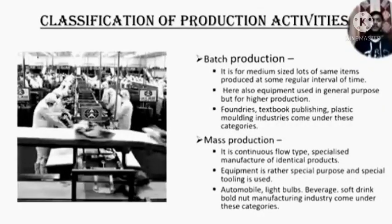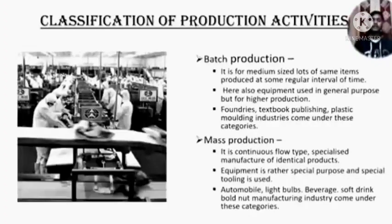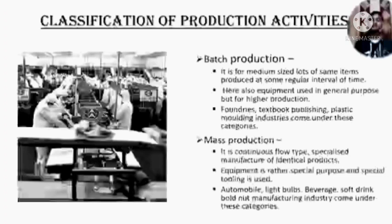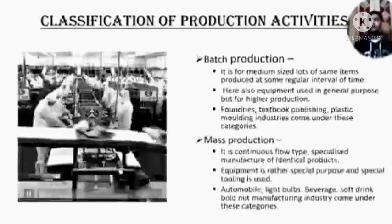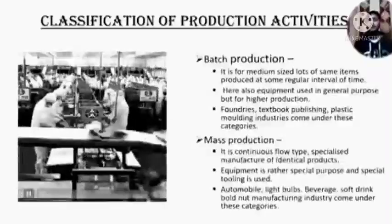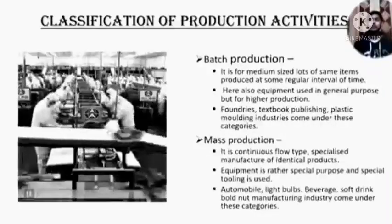The next one is mass production. It is a continuous flow type, specialized manufacture of identical products. Equipment is rather special purpose and special tooling is used. Automobile, bolt and nut manufacturing industries come under these categories. In this animation, we can easily see the virtue of mass production.